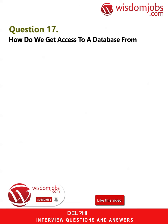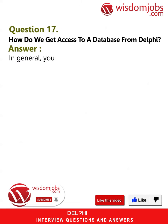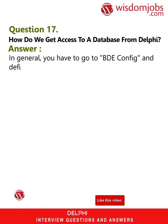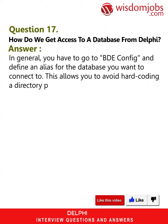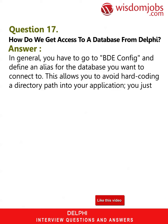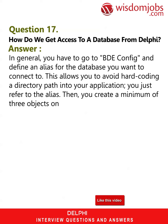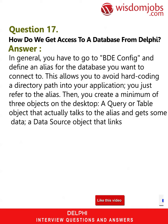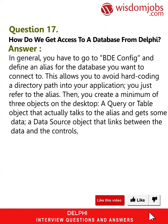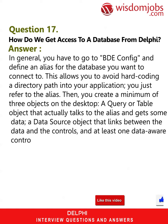Question 17: How do we get access to a database from Delphi? Answer: In general, you have to go to BDE Config and define an alias for the database you want to connect to. This allows you to avoid hard-coding a directory path into your application — you just refer to the alias. Then you create a minimum of three objects on the desktop: a query or table object that actually talks to the alias and gets some data, and a data source object that links between the data and the controls.